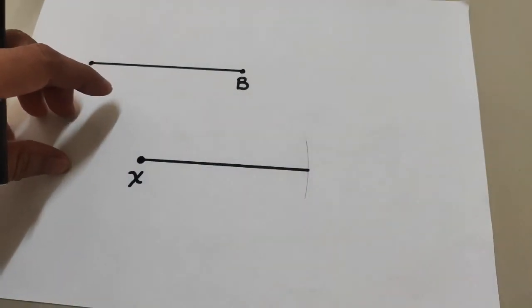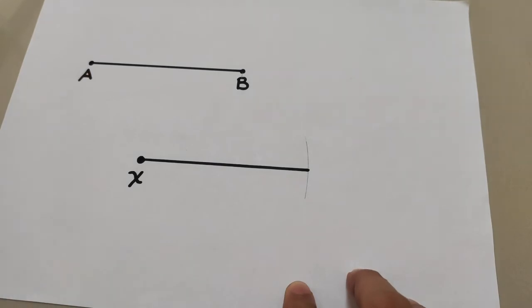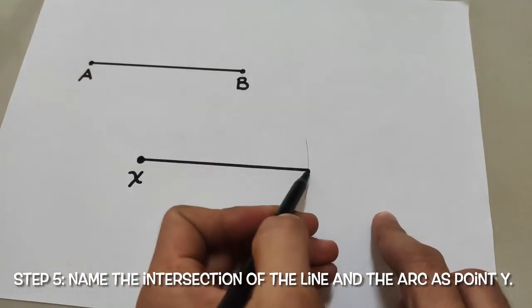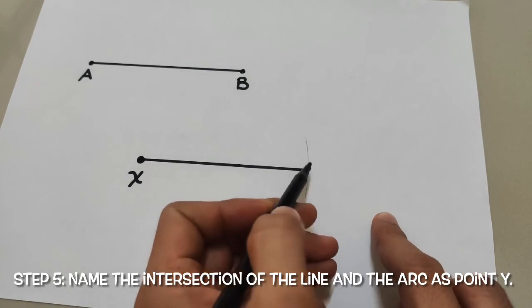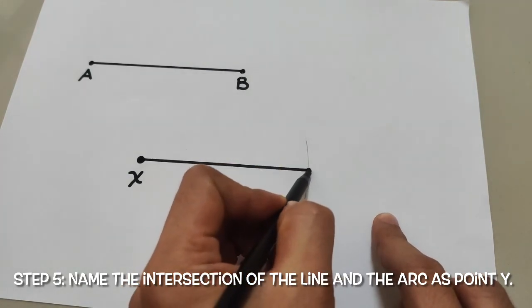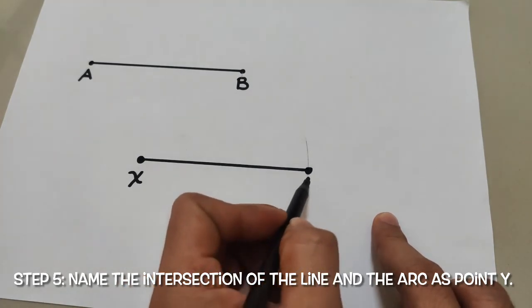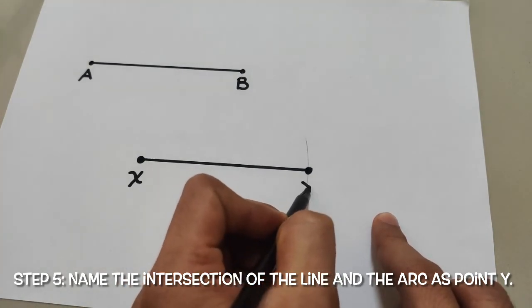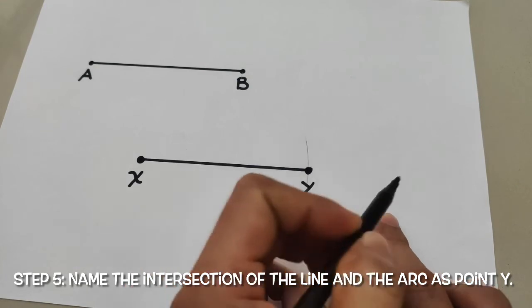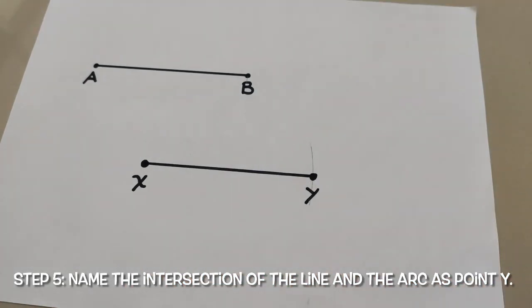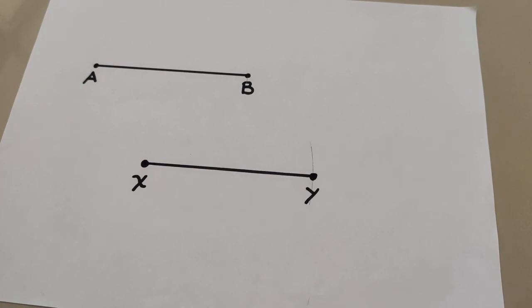Now to complete the segment, let's draw a point on the intersection of the line and the arc. Let's name it as point Y. And done. You now have congruent segments.